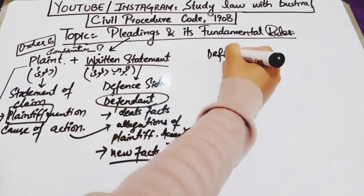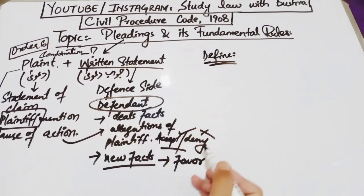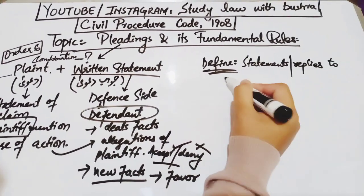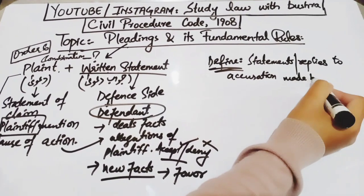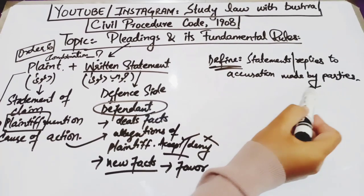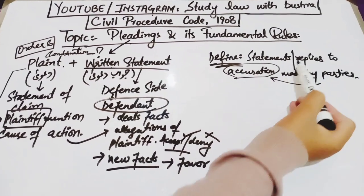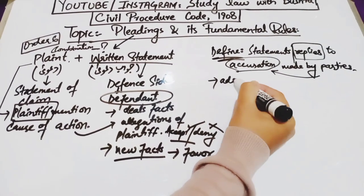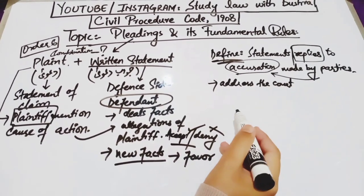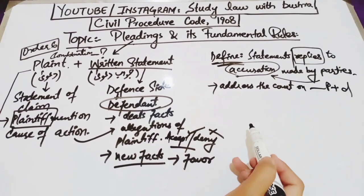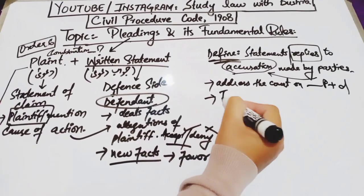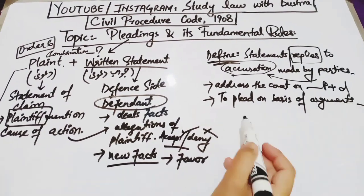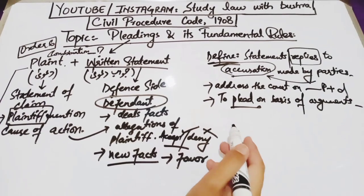So that was simply the meaning of pleading — which is plaint and written statement. If we properly define pleading, we define it as: pleading means those statements or replies to the allegations made by the parties — that is, plaintiff and defendant — who are making allegations against each other. Those statements and replies are what we call pleading. Or we can say: pleading means to address the court on behalf of the parties, that is, plaintiff or defendant. Or we can say that pleading simply means to plead on the basis of arguments — to carry the case forward on the basis of arguments. That is the definition of pleading.